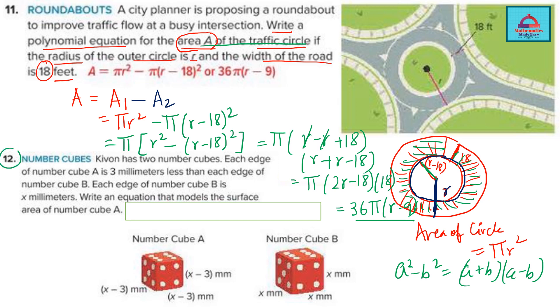Let's come to question 12 now. In question 12 very similarly you are given a different shape which is cube. Two number cubes. Each edge of cube A is 3 millimeters less than of the edge of cube B. Two cubes A and B. If B has each side x then for the new cube it is 3 less. So x - 3 and in a cube remember all sides are equal. So length, breadth, height all are equal. Each edge of cube B is x millimeters. For the new one it is x - 3. Write an equation that models the surface area of the cube.